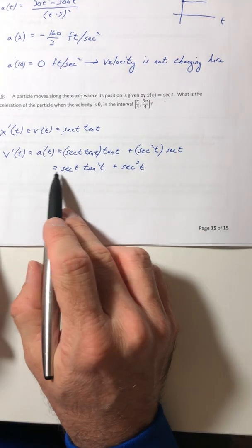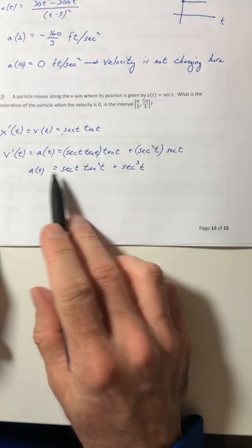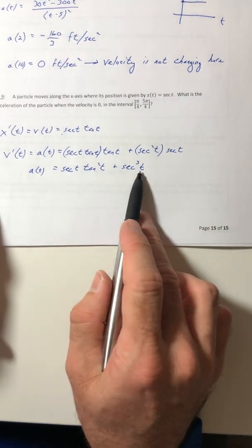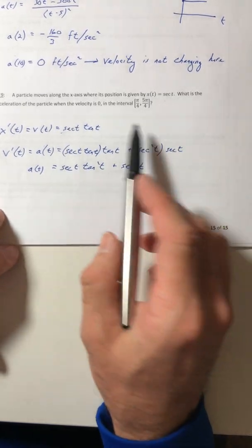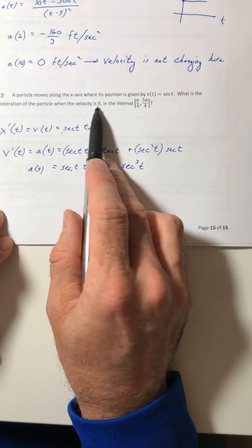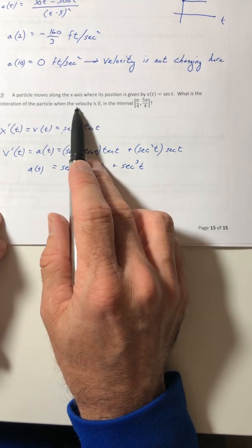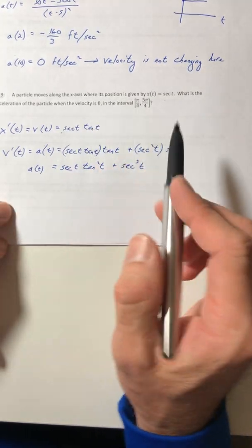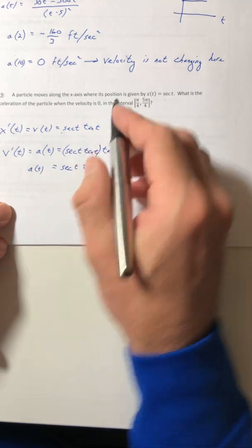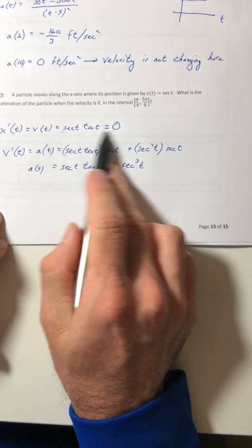Okay. So there's my acceleration function, but I need a time to actually stick in there to get the actual value. So they didn't tell it to me. So a lot of students when they read this, they say when the velocity is 0, they change that into time is 0 and they stick 0 in for the t. That's not what it says. It says velocity is 0. Here's your velocity. That is 0. So you got to solve this equation.